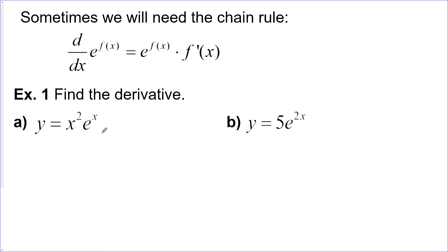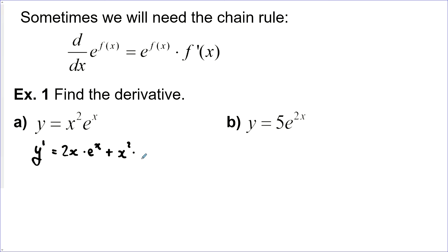Now let's find the derivative of these functions. We'll call this y prime, and we'll need the product rule for this one. So: 2x times e to the x, plus x squared times the derivative of e to the x, which is just e to the x. If you'd like, you can do some factoring here, but I'll just leave it like this.